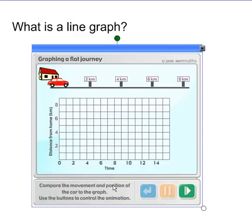Compare the movement and position of the car to the graph. As the car moves, so does the time and the distance away from home. When it stops, it becomes horizontal. And again, when it moves, it's on a slope again. But notice when it goes home, it's moving very fast and thus the line on an angle is fast also.